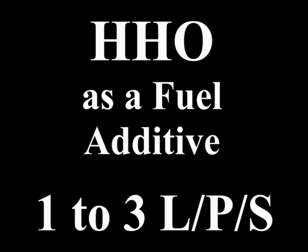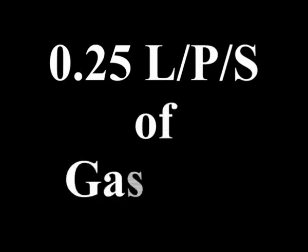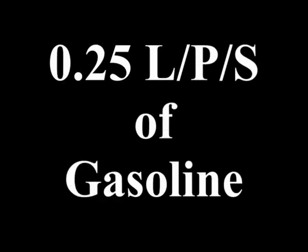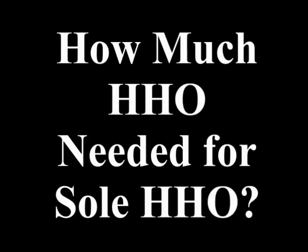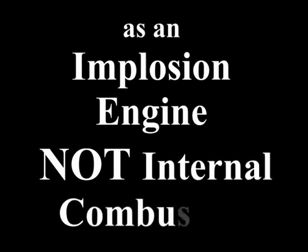Now if we're only requiring 0.25 of regular gasoline, petrol to run at 15 miles per gallon at 60 miles an hour, then how much brown gas do we need in order to run the engine solely on brown gas as an implosion engine rather than an internal combustion engine?